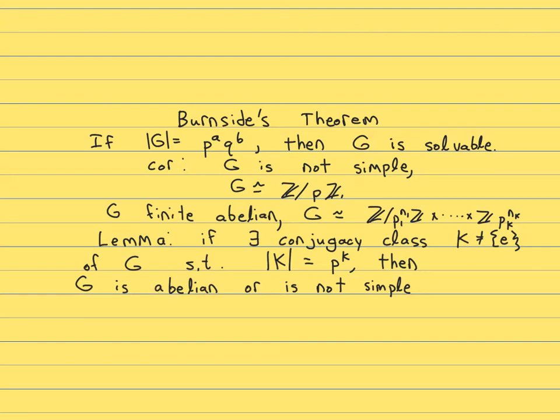Because if every conjugacy class is of size one, you're in the case that you have an abelian group. Otherwise, all the elements of conjugacy classes of size one, you might remember together, actually form the center, and the center is a non-trivial normal subgroup. So it's worth remembering that.